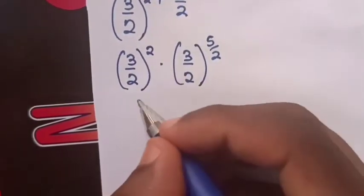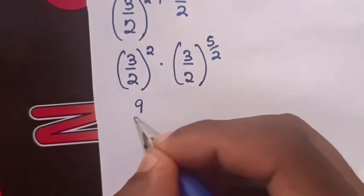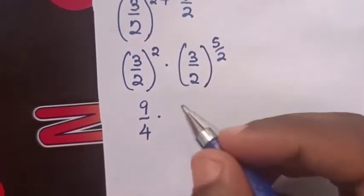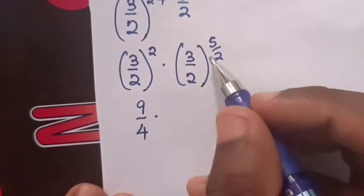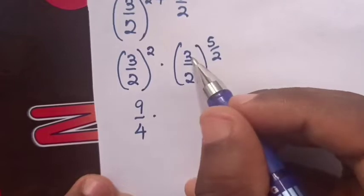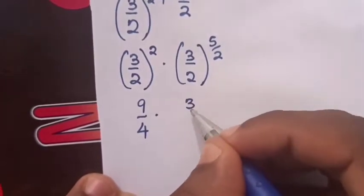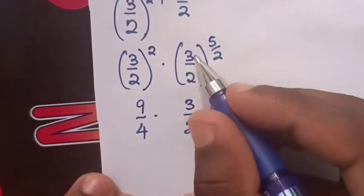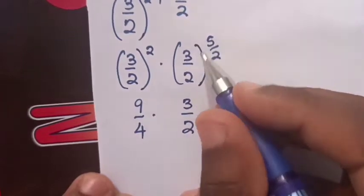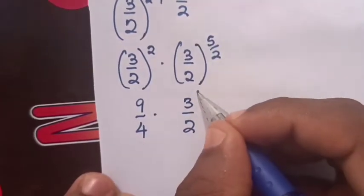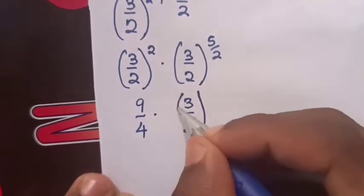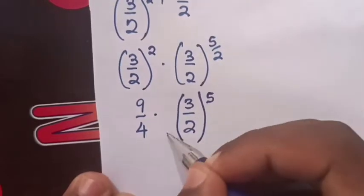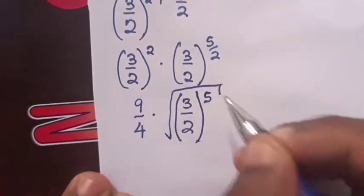Then 3 over 2 squared equals 9 over 4. The power 5 over 2 is equal to 5 times power of one half, and one half is the same as a square root, so we multiply by 5 under the square root.